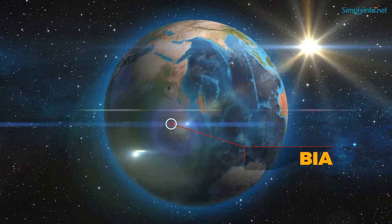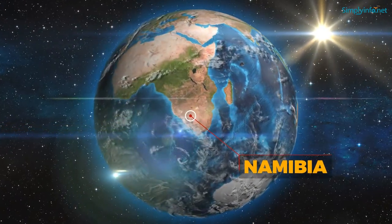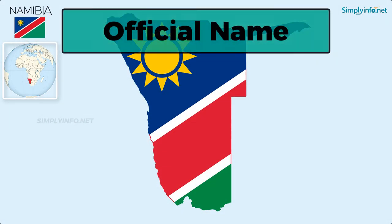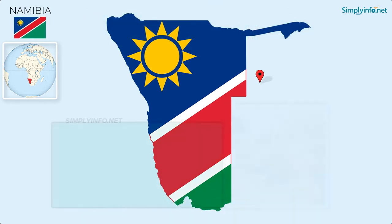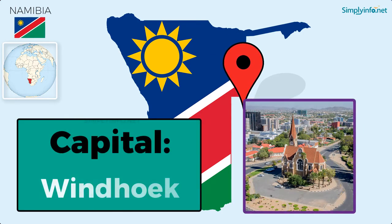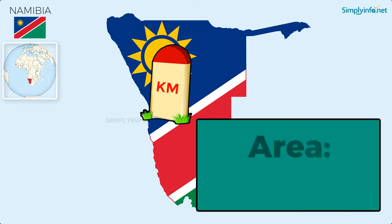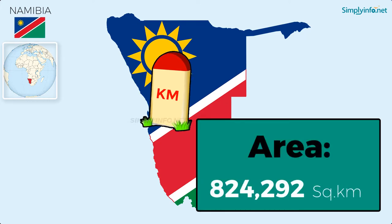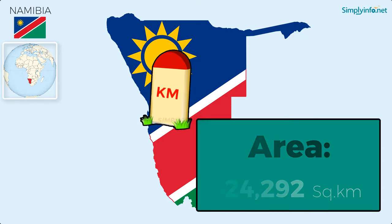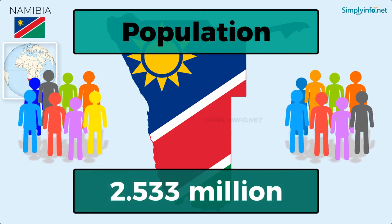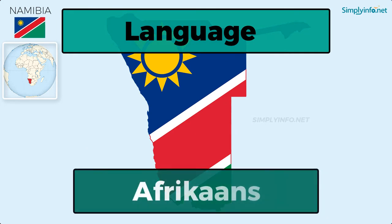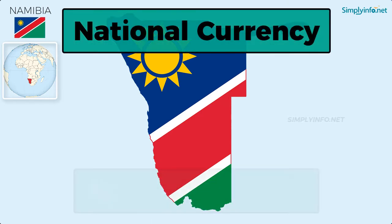Name: Namibia. Official name: Republic of Namibia. Capital: Windhoek. Area: 824,292 square kilometers. Population as of 2018: 2.533 million. Language: Afrikaans. National currency: Namibian dollar.